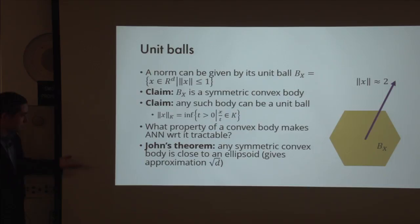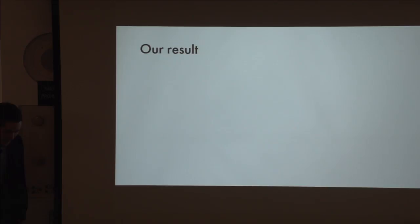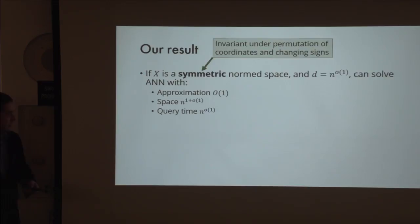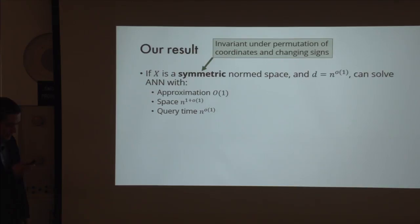What is a symmetric norm? A symmetric norm is one that is invariant under all permutations and sign changes. For example, Euclidean norm is clearly symmetric, but there are many more examples. The parameters we are getting: we can handle any subpolynomial dimension. Ideally we want constant approximation, near-linear space in the number of points, and subpolynomial query time. What we actually get is approximation poly-log-log N.